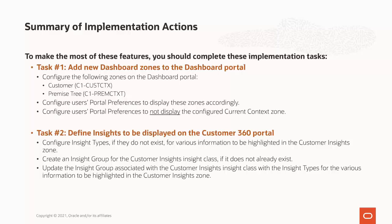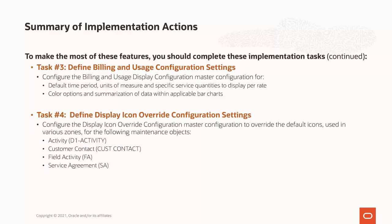You then update the insight group for the Customer Insights Insight Class with the insight types to be highlighted. The Customer Insight Zone uses this insight group to determine which insight types to highlight. Next, you must define the Billing and Usage Configuration settings for the Usage and Billing tab in the Financial Details area of the Customer 360 portal. This is done on the Billing and Usage Display Configuration Master Configuration record. Here, you can configure a default time period and the units of measure and specific service quantities to display per rate. You can also define color options and summarization of data within applicable bar charts. Finally, you can override the default display icons in the new zones on the Display Icon Override Configuration Master Configuration record.